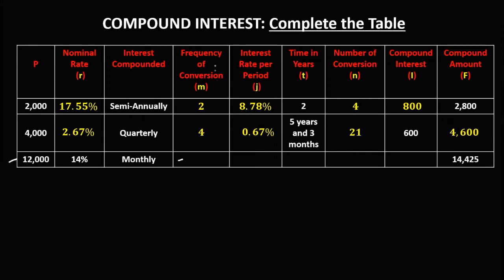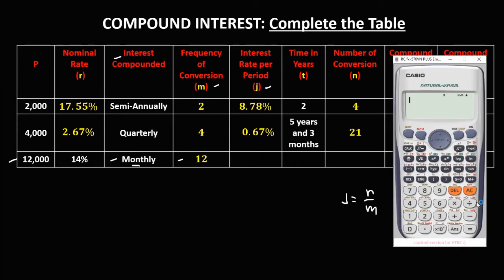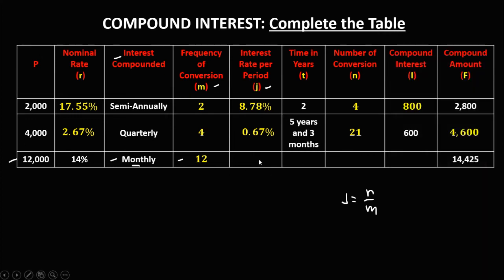For the next row, the frequency of conversion M: since interest is compounded monthly, M is equal to 12. To solve for J, R is equal to 14%, so we have 14 divided by M, where M is 12, so 14 divided by 12 equals 1.17. J is equal to 1.17%.